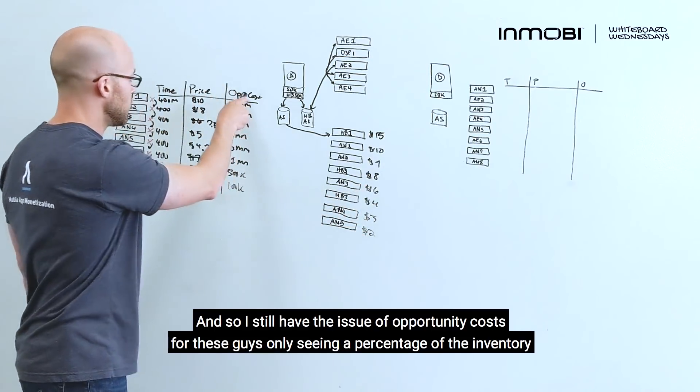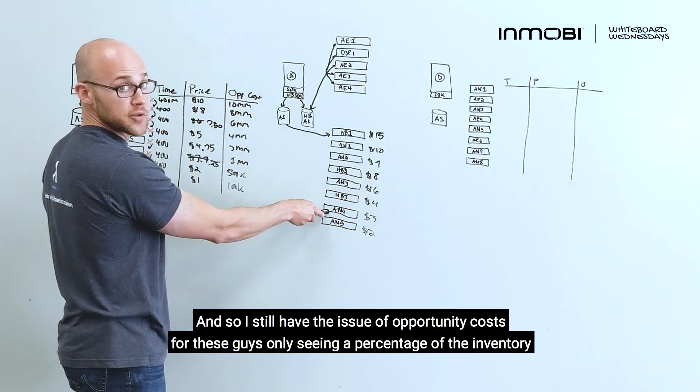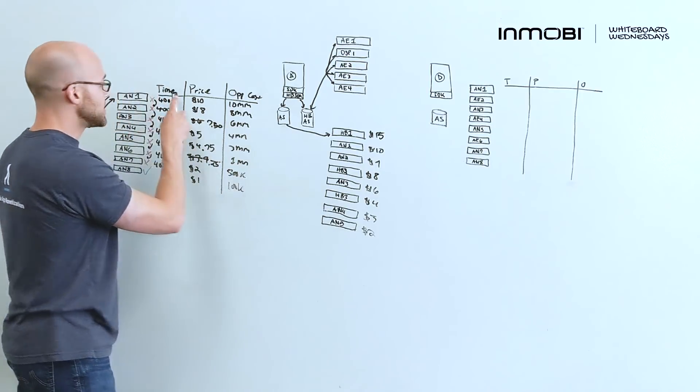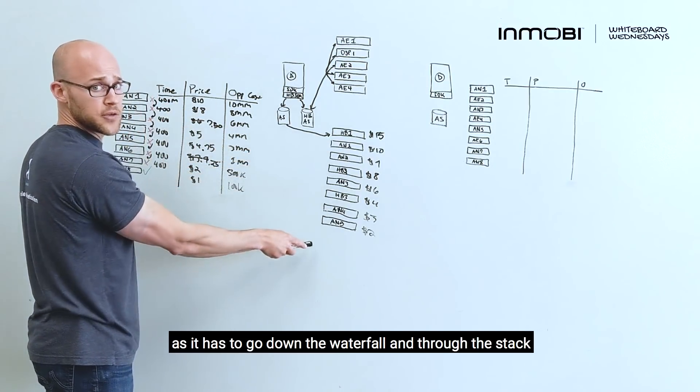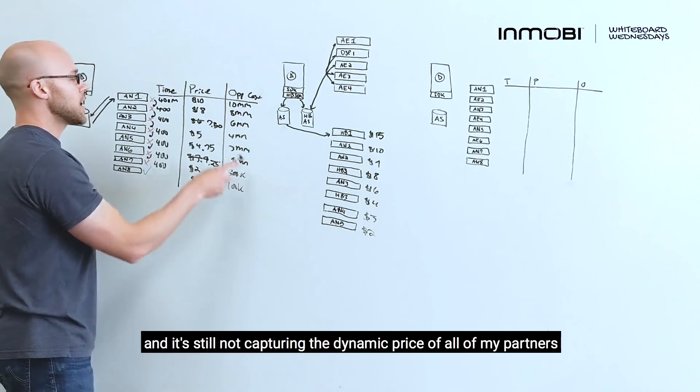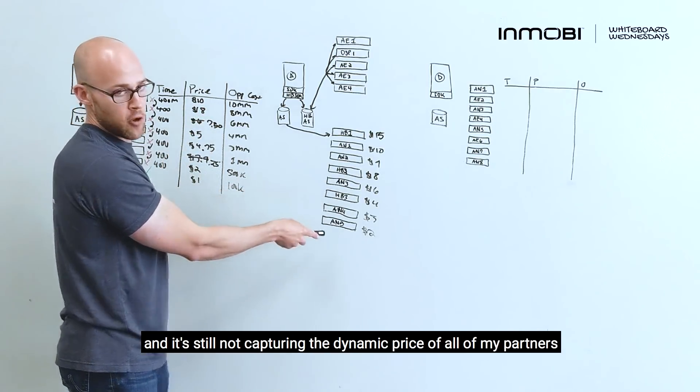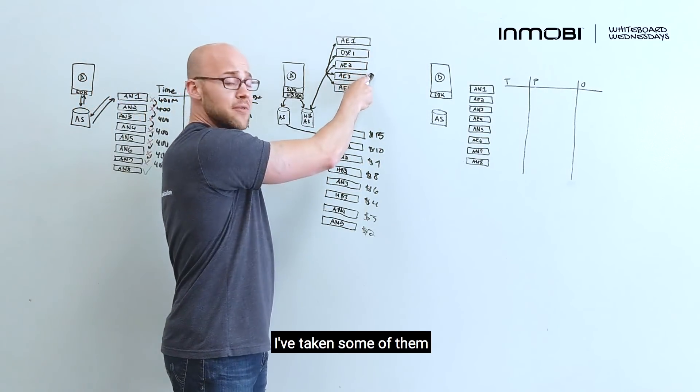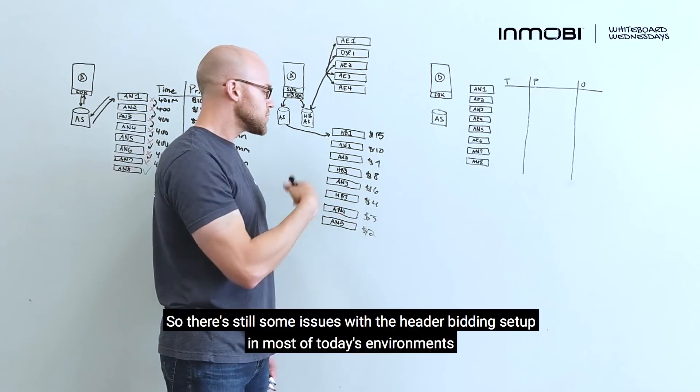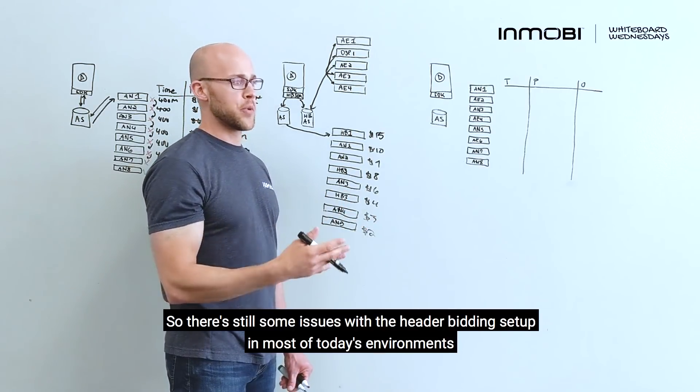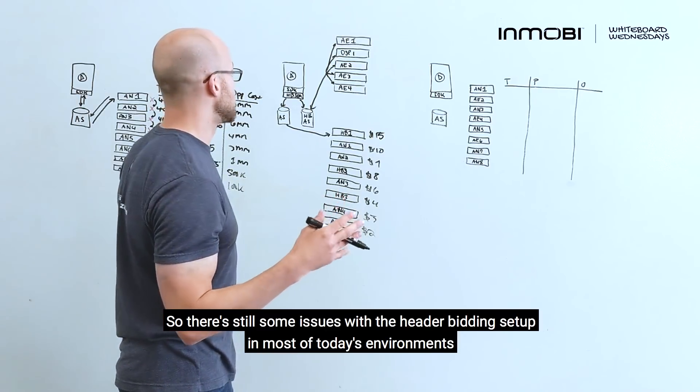And so, I still have the issue of opportunity cost, where these guys only see a percentage of the inventory. I still have issues with time and latency, as it has to go down the waterfall through the stack. And I'm still not capturing the dynamic price of all of my partners. I've taken some of them, but not all of them. So, there's still some issues with the header bidding setup in most environments.